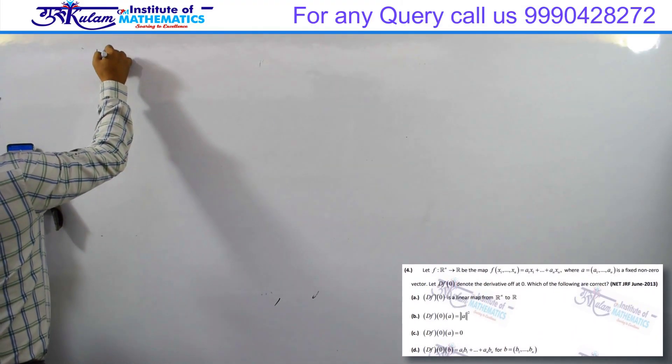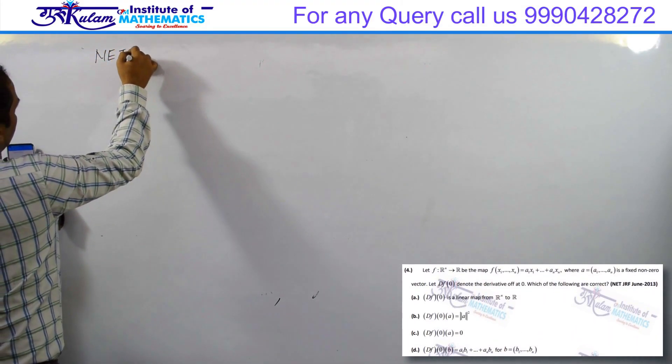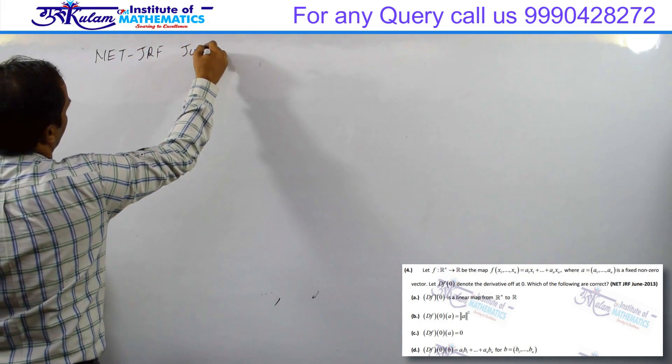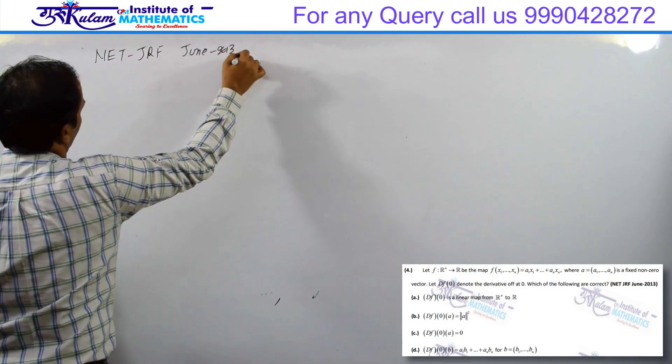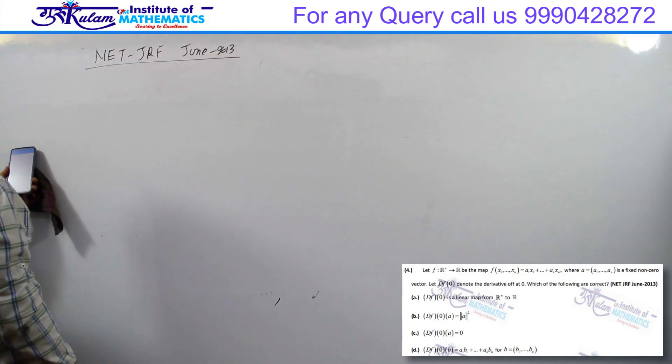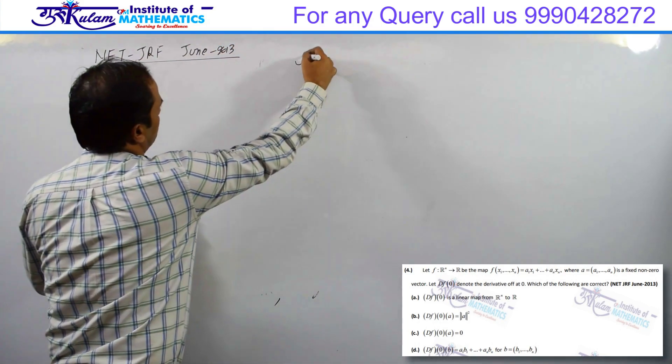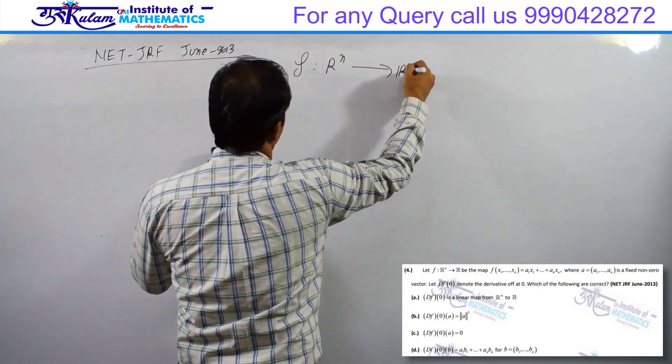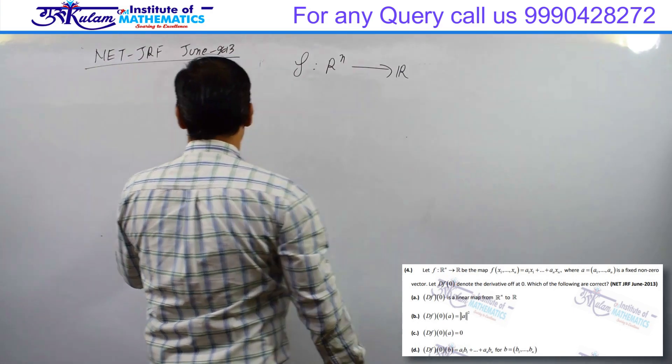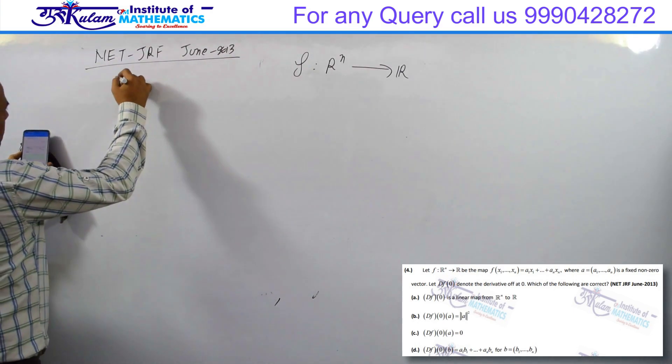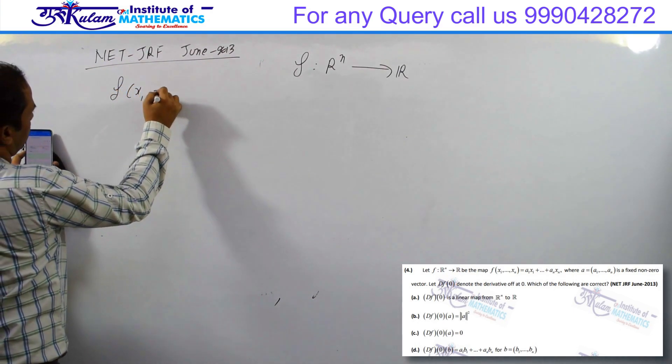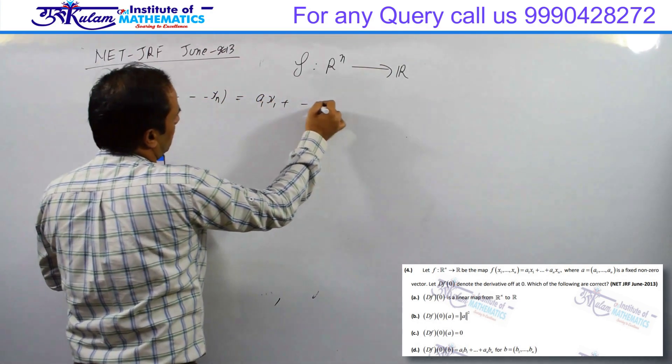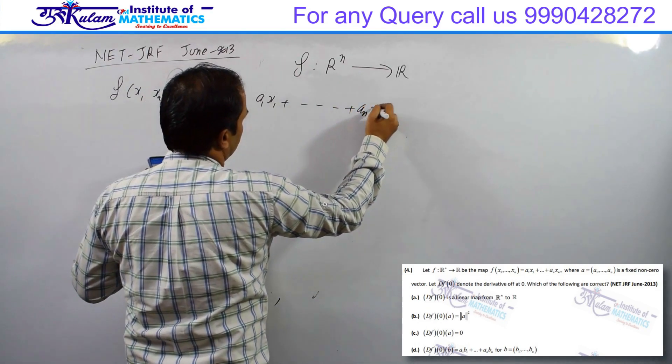This question is from NET-JRF June 2013. The question gives you a function f defined from R^n to R, such that f(x1, x2, ..., xn) equals a1x1 plus a2x2 plus ... plus anxn.